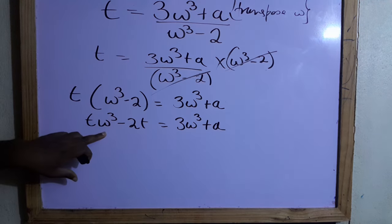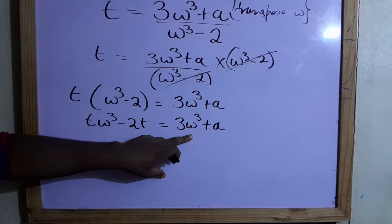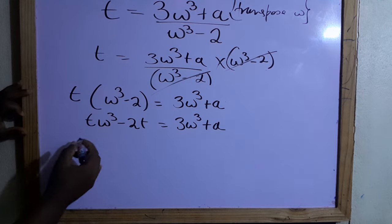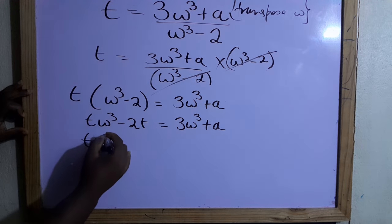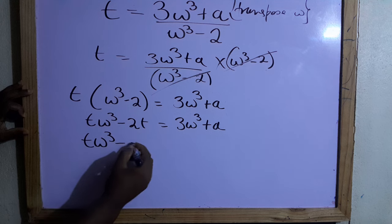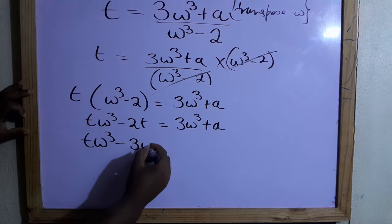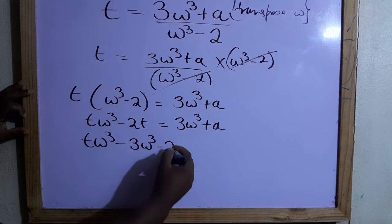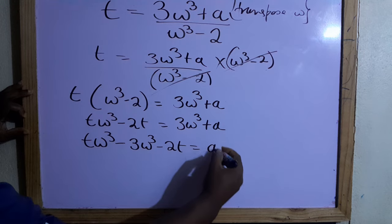Next thing we need to do is group the ω terms. So this positive 3ω³, we're going to carry it over to this side, so that becomes minus. It will be ℓω³ - 3ω³ - 2ℓ which is equal to a.